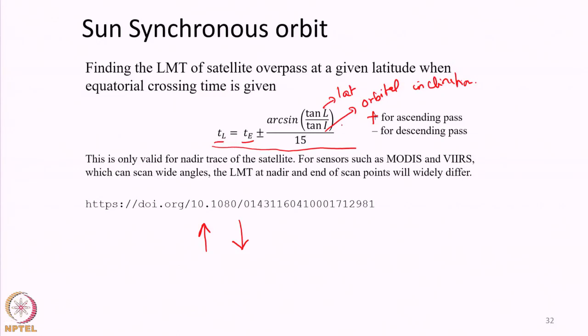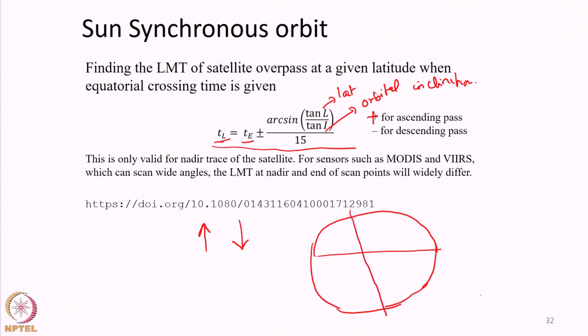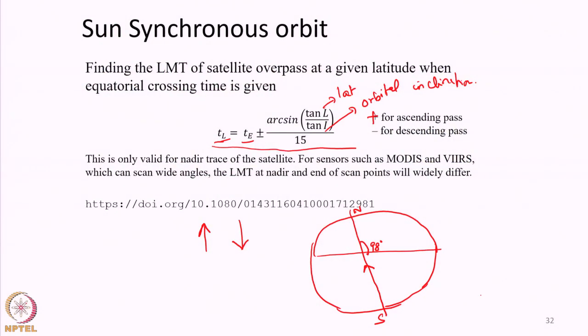Returning to the equation relating equatorial overpass time to time at any latitude: let us say the orbital inclination is 98 degrees and the satellite is moving in ascending mode. By convention for satellites in polar or near polar orbits, inclination is always measured when the satellite is in ascending mode. So the inclination is marked accordingly.